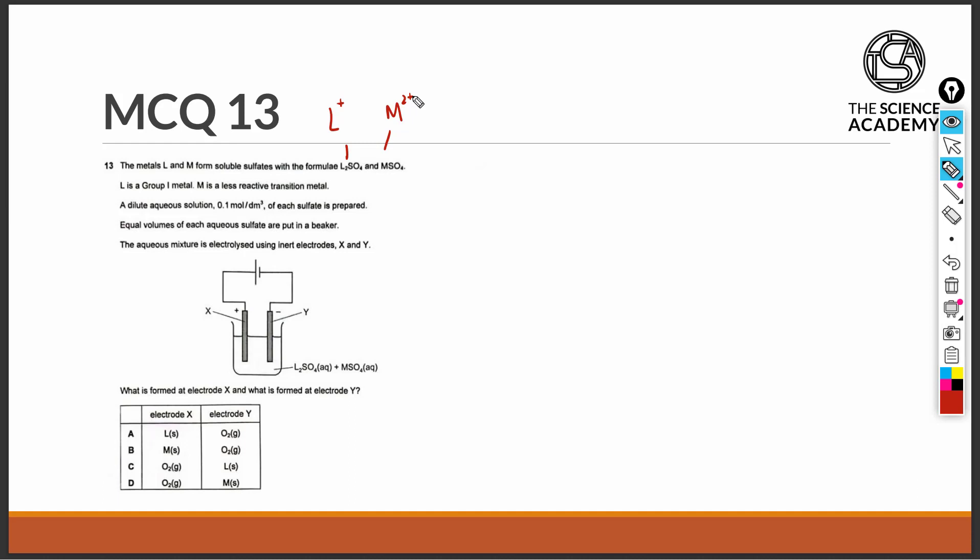L is a group 1 metal. M is a less reactive transition metal, the keyword being less reactive. A dilute aqueous solution of 0.1 mol per dm³ of each sulfate is prepared.